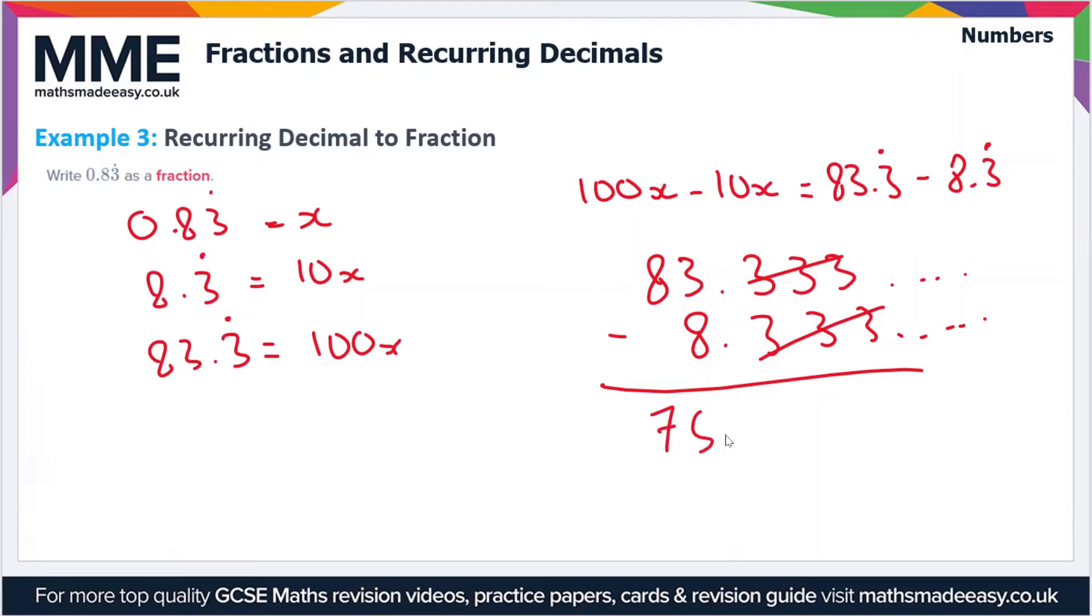That's equal to 75. These are going to all be zeros, so you've got 75.0. Effectively what we have here is 100x minus 10x. So 100x minus 10x equals 90x. We've just found an expression for 90x. So 90x equals 75, therefore x equals 75 divided by 90.